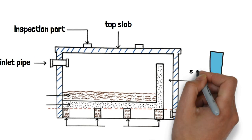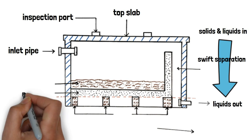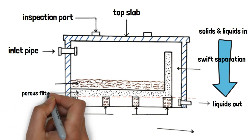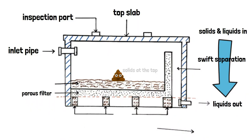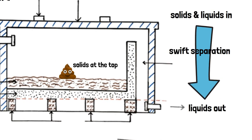a biodigester is meticulously engineered for the swift separation of your excreta from black water. This rapid solid liquid separation is made possible by the biodigester's porous filter. The porous filter is a layer of hollow concrete slabs or ballast porous slabs. The idea here is to hold the solids at the top and have the liquids flow downwards through the porous filter.